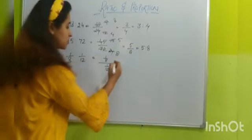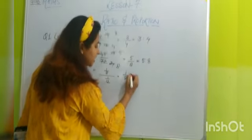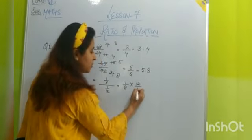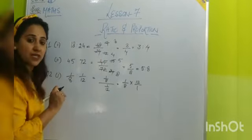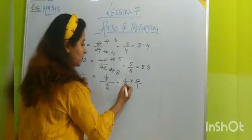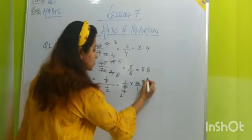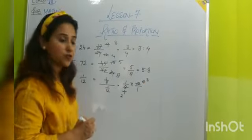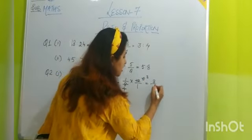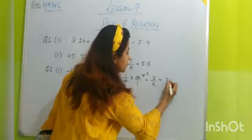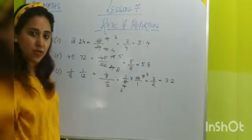That means 1 upon 8 multiplied by 12 upon 1. When you invert 1 upon 12 it will become 12 upon 1. 2 4s are 8 and 2 6s are 12. So what is your answer? 3 upon 2 or 3 ratio 2.